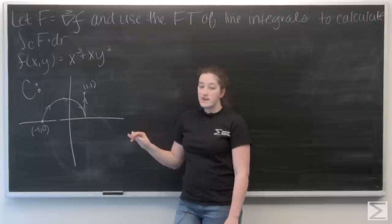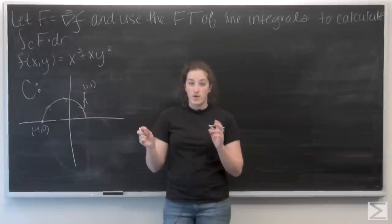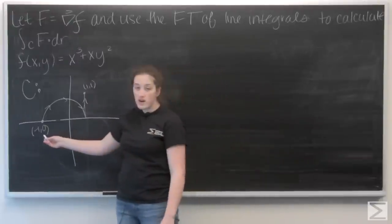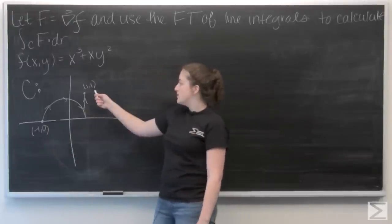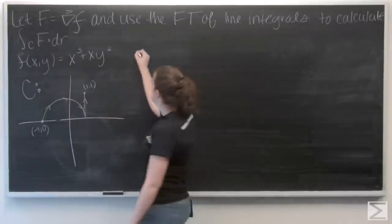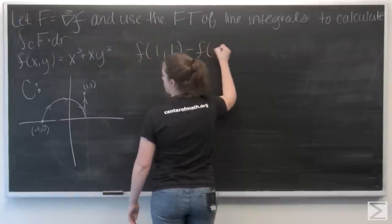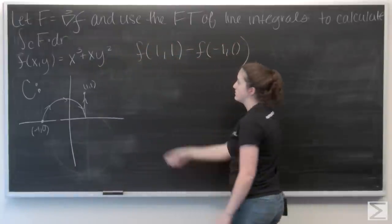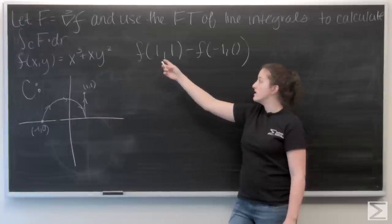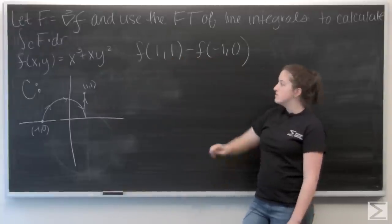So, really this line integral is independent of the shape of the curve. I only care about the start point and the end point. Well, here my start is negative 1, 0. My end is 1, 1. So, to calculate this line integral, I want to find the function value at 1, 1 and then subtract the function value at negative 1, 0. So, let's go ahead and plug these in.